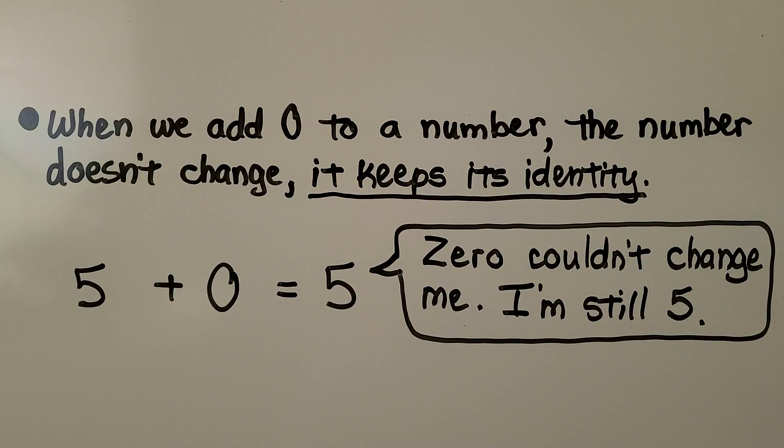When we add 0 to a number, the number doesn't change. It keeps its identity. We have 5 plus 0. It's still 5. The 0 couldn't change it. When we add 0 to any number, that number will stay the same.